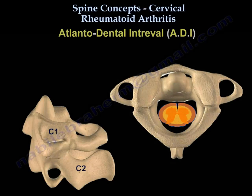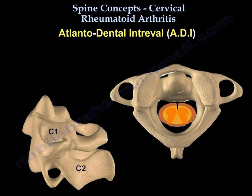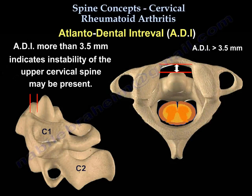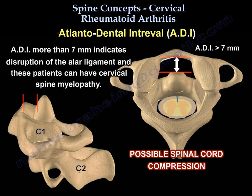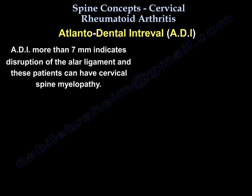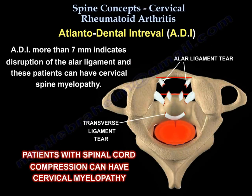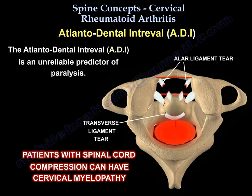On the lateral x-ray, you assess the atlanto-dens interval (ADI). If the ADI is more than 3.5 mm, instability may be present. If it is more than 7 mm, it indicates disruption of the alar ligament with more significant damage. These patients can develop myelopathy, and the ADI is an unreliable predictor of paralysis.